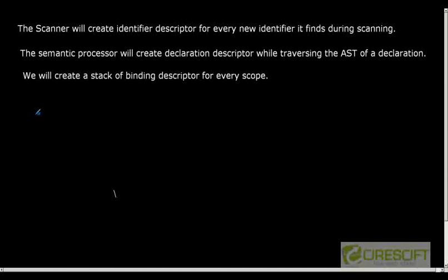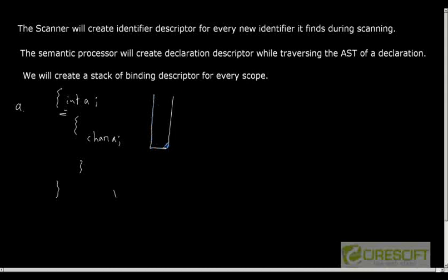Suppose I have identifier descriptor A. In one scope I have 'int a', and in another inner scope I have 'char a'. Starting from the outer scope, I maintain a binding stack for A. Initially, A is bound to the declaration descriptor for 'int a'. As soon as we enter the inner scope, A is bound to the declaration descriptor for 'char a'. So the top of the binding stack always gives the innermost binding of a given variable.